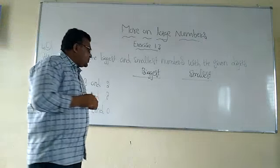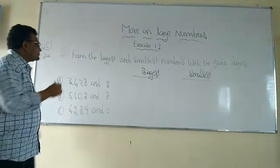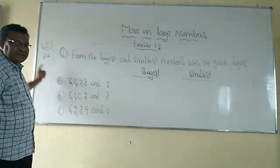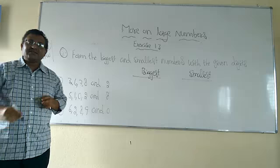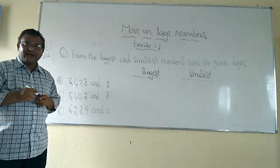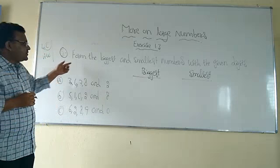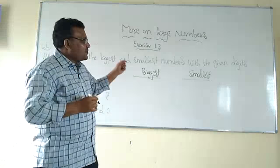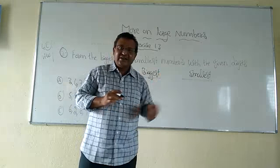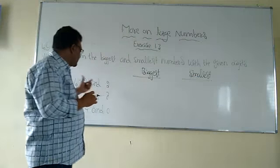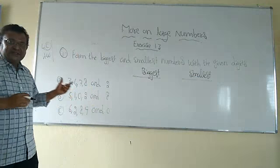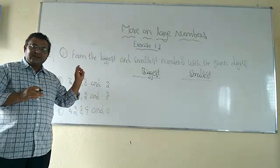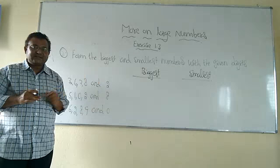In the next fifth domain, in the fourth domain, one more problem C is there — that is homework for you to do. And the next fifth domain: form the biggest and smallest numbers with the given digits. So some digits are given here, and by using these digits, we have to form the biggest number as well as the smallest number.